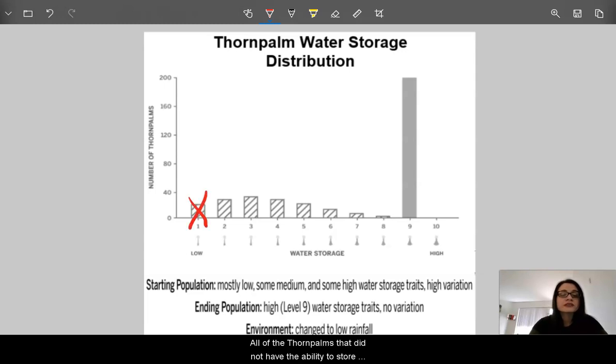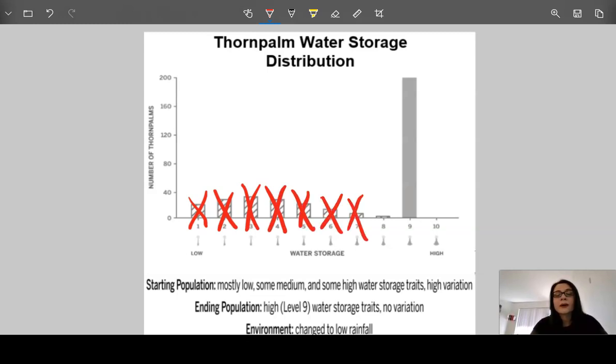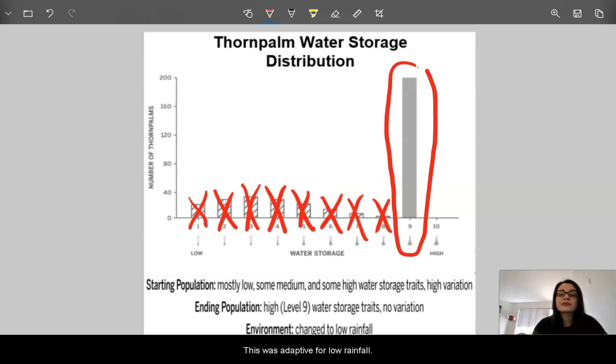all of the thorn palms that did not have the ability to store water eventually died because they weren't able to complete life functions. But, for those with the level 9 water storage trait, this was adaptive to low rainfall. All of those with the 9 level water storage trait were able to survive, store water, and reproduce offspring.